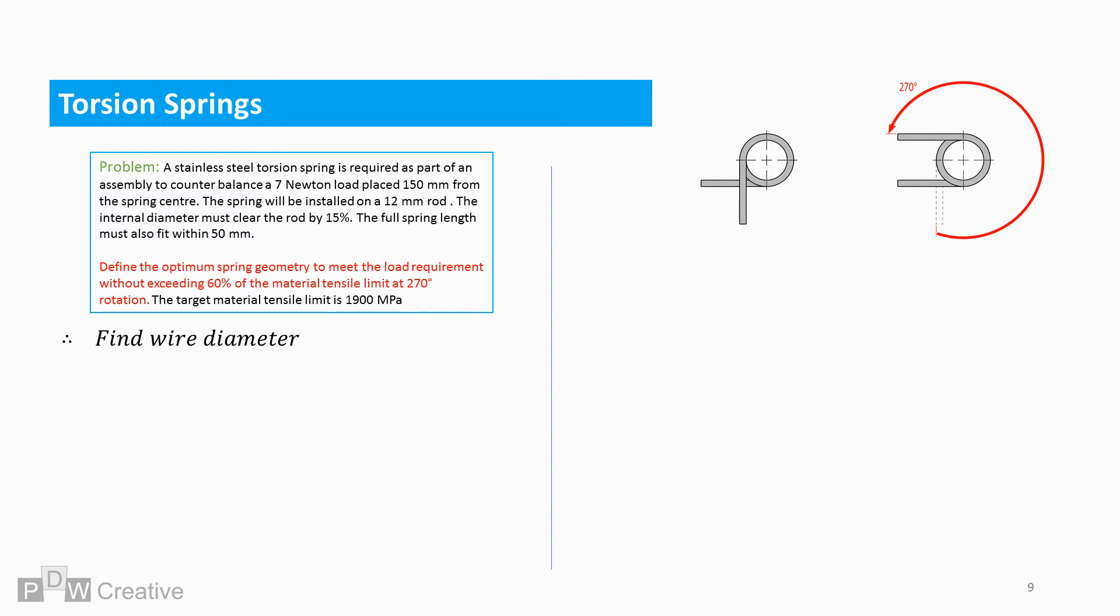Next, we can find a rough estimate of the wire diameter. I'm going to say rough because this is going to be recalculated later, as there is a variable we cannot calculate yet.